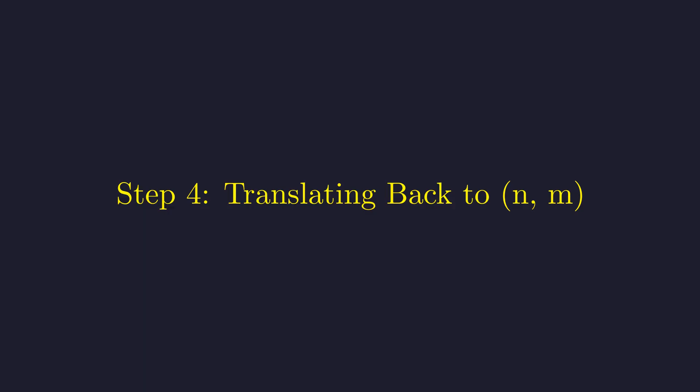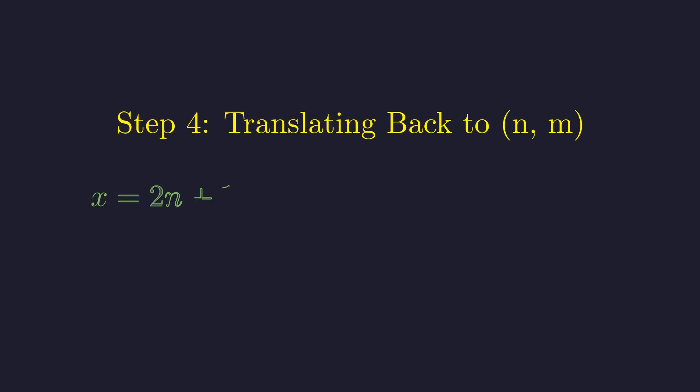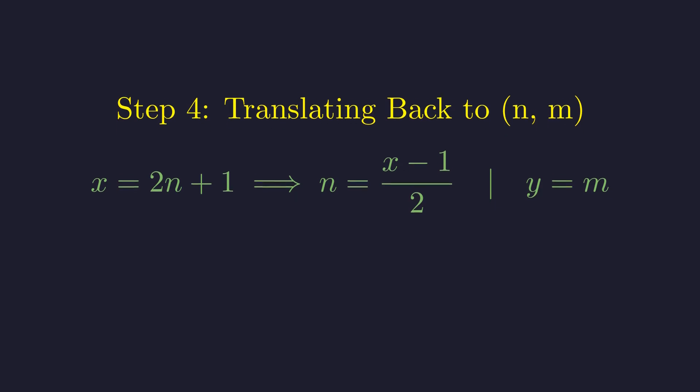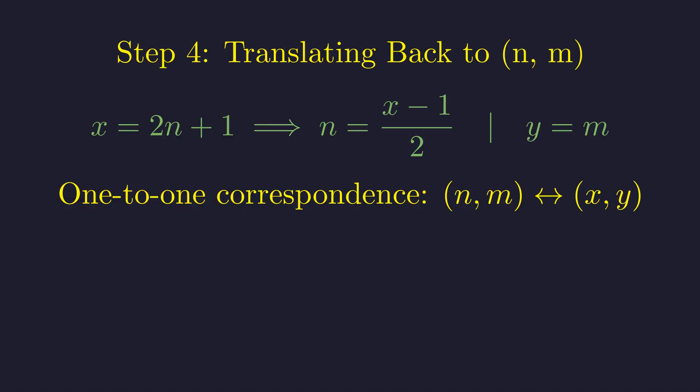Now we translate these x, y pairs back to our original variables n and m using the substitutions we defined. Recall that n equals the quantity x minus 1 all divided by 2, and m is simply equal to y. There is an exact one-to-one correspondence between integer solutions of our original triangular number equation and solutions to Pell's equation.